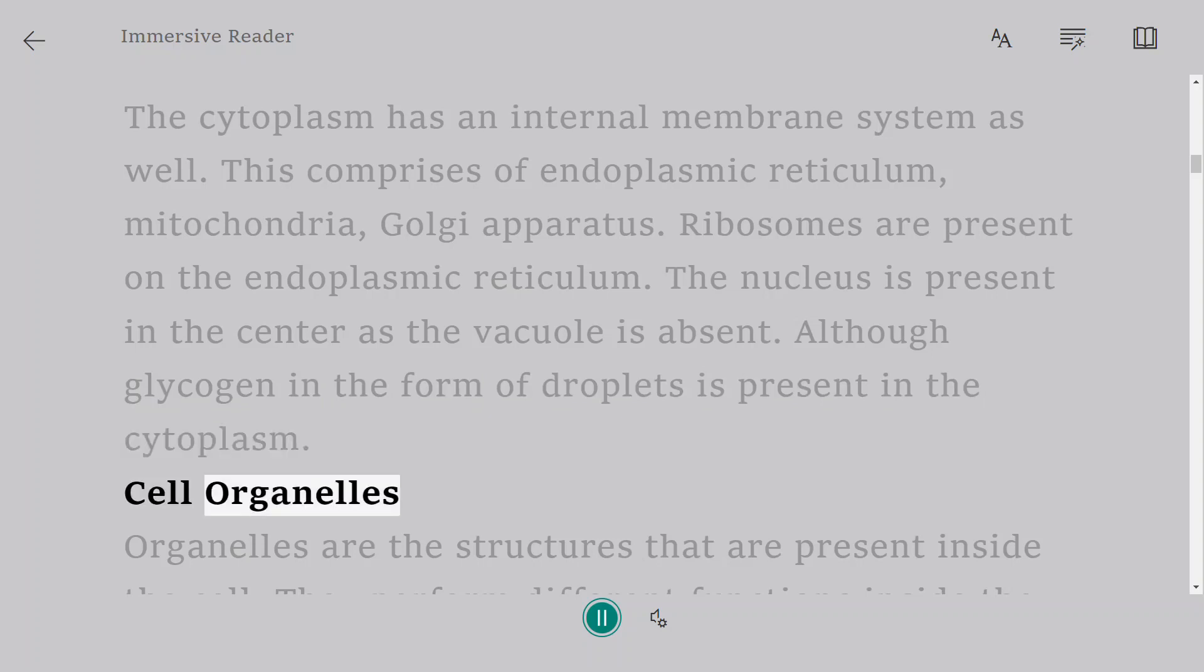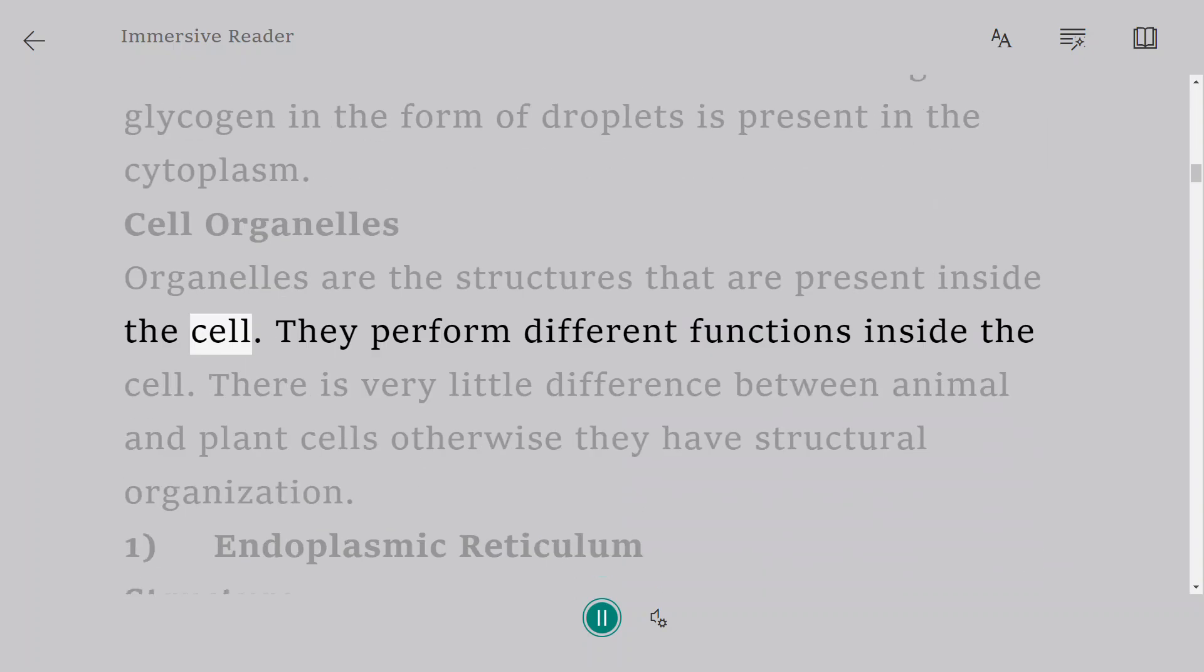Cell Organelles. Organelles are the structures that are present inside the cell. They perform different functions inside the cell. There is very little difference between animal and plant cells otherwise they have structural organization.